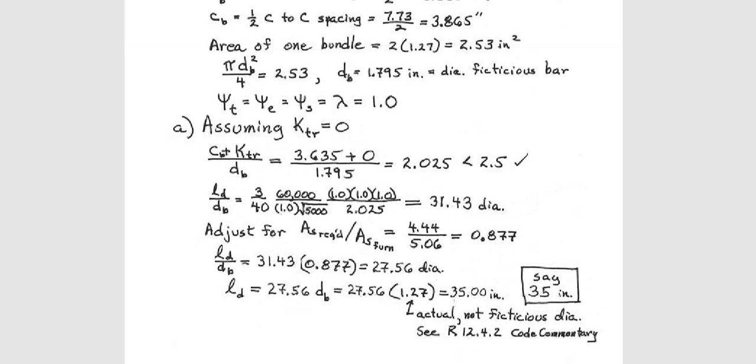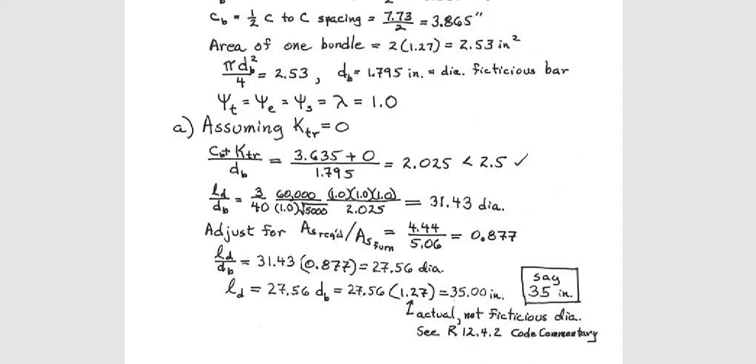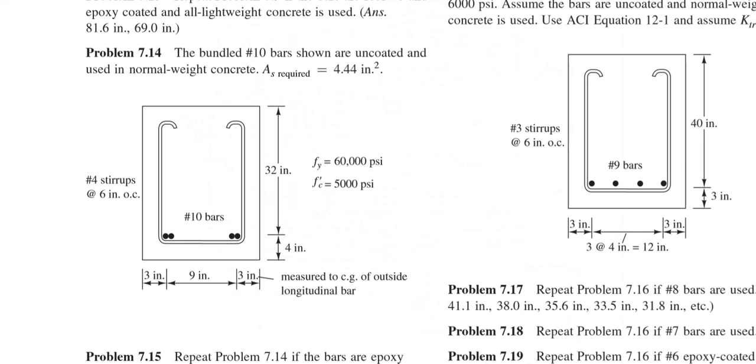What was the answer last time is 35? This time 29? So assuming KTr 0 is conservative because you are providing always more. So it is a better idea to calculate KTr, but if you want to save time you can use KTr 0. So hopefully you understood this problem. Whenever there is a bundle, you need to determine the fictitious bar diameter and that is used in some part of the equation. And also that diameter you need it to determine the distance from center to this side, center to this side and half of the center to center spacing to determine CB. So hopefully you understood the problem. In next video I will discuss another problem. Thank you.